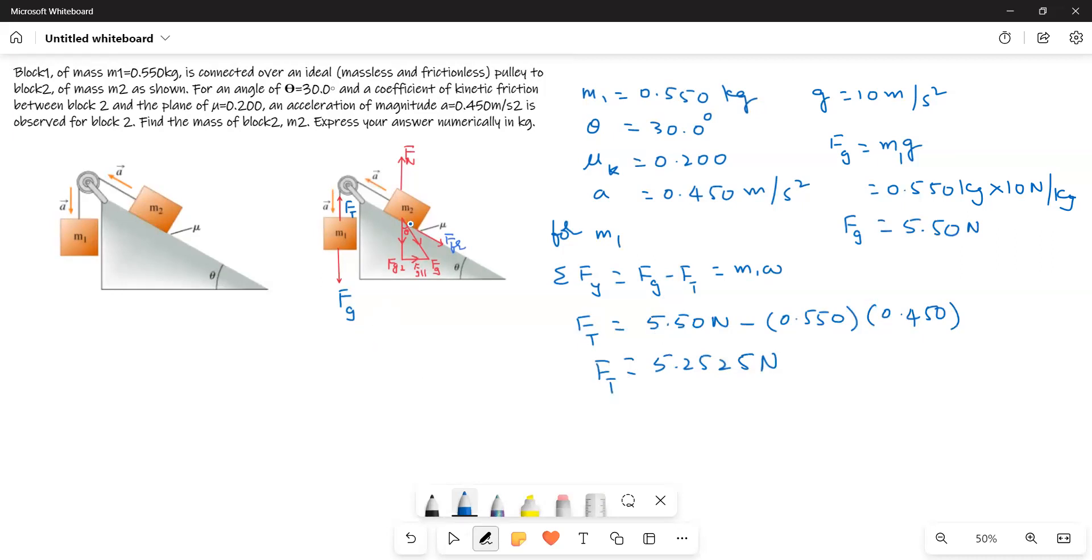Now, we will write the force equation for M2 and the block is going up. That is why the friction is going in the downward direction. And then the other force is Fg parallel.